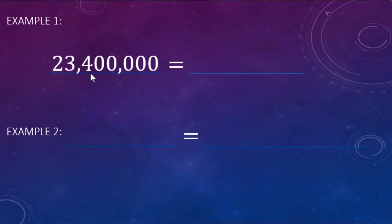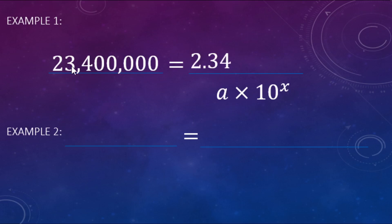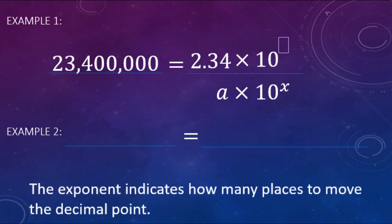Example: 23,400 written in scientific notation. We start with 2.34, putting the decimal point right after the first digit. Then times 10 to the — we look at how much that decimal point moved. For really big numbers we count the places and it's going to be positive. The decimal moved from the end all the way to after the two — that's seven spots — so 2.34 times 10 to the seventh. The exponent tells you how far the decimal point moved over.